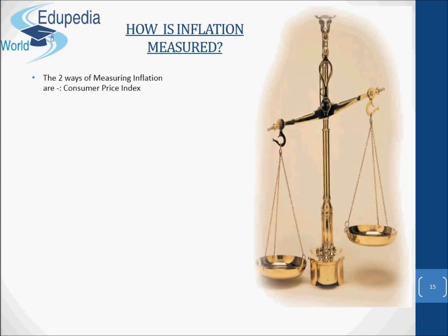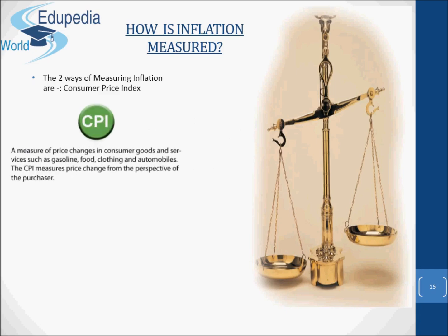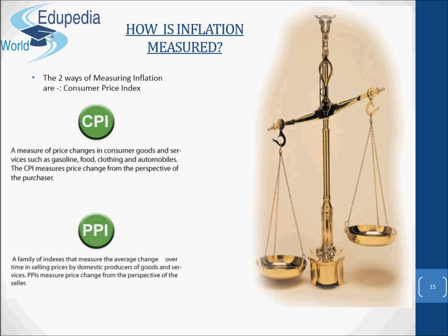Now let's see how inflation is measured. There are two ways of measuring inflation. The Consumer Price Index (CPI) is a measure of price changes in consumer goods and services such as gasoline, food, clothing, and automobiles. The CPI measures price change from the perspective of the purchaser. The Producer Price Index (PPI) is a family of indexes that measure the average change over time in selling prices by domestic producers of goods and services. PPI measures price change from the perspective of the seller.